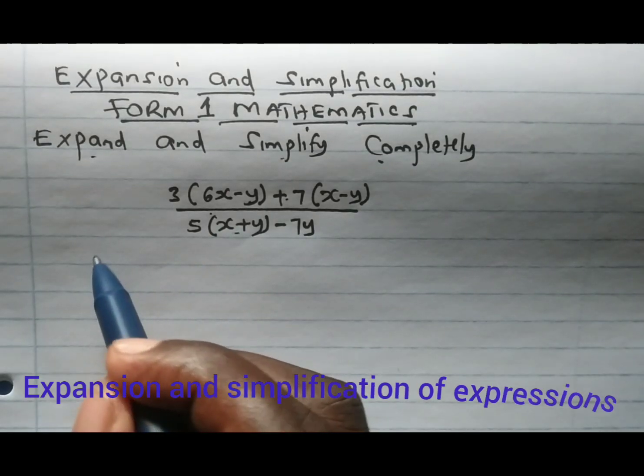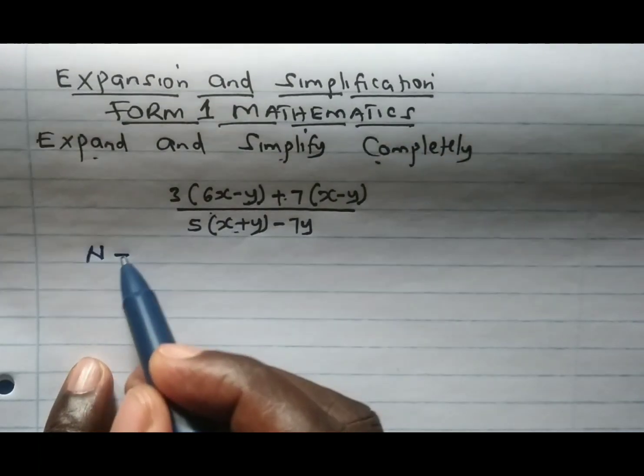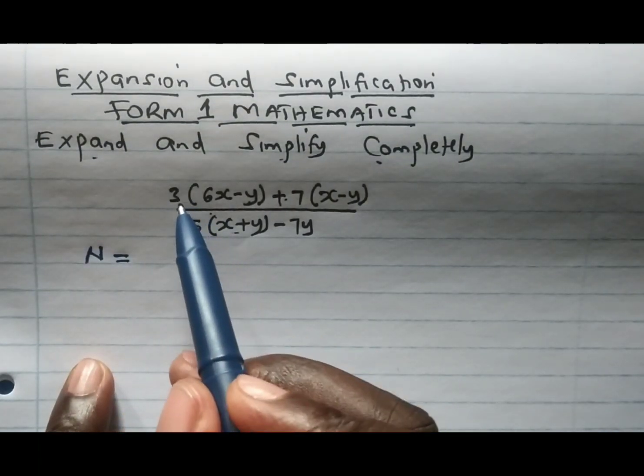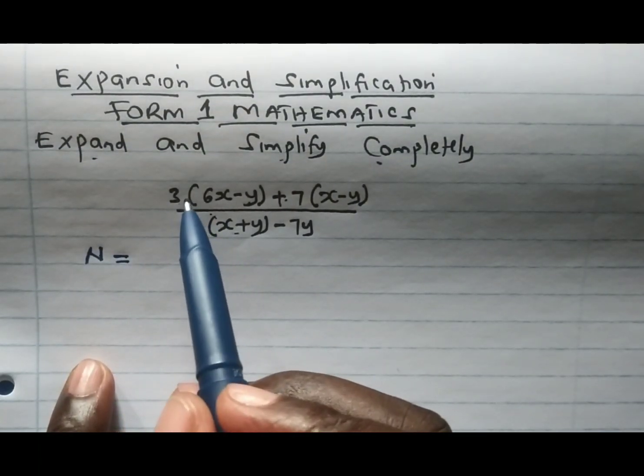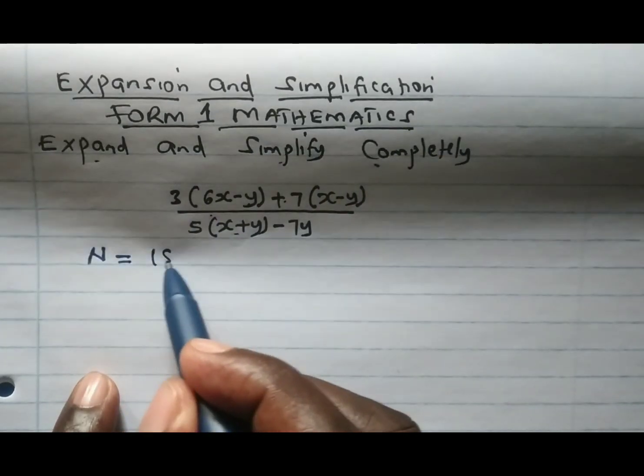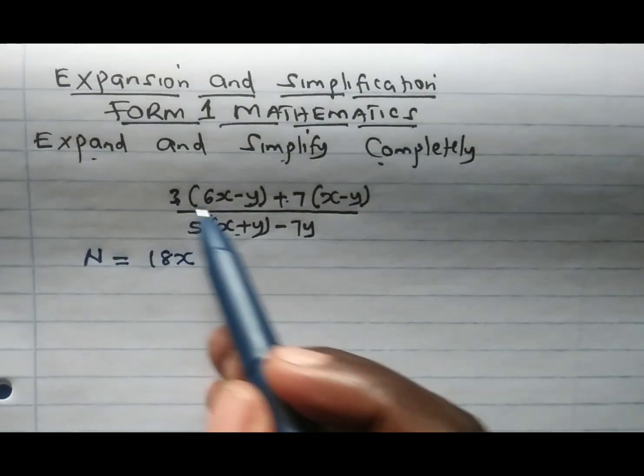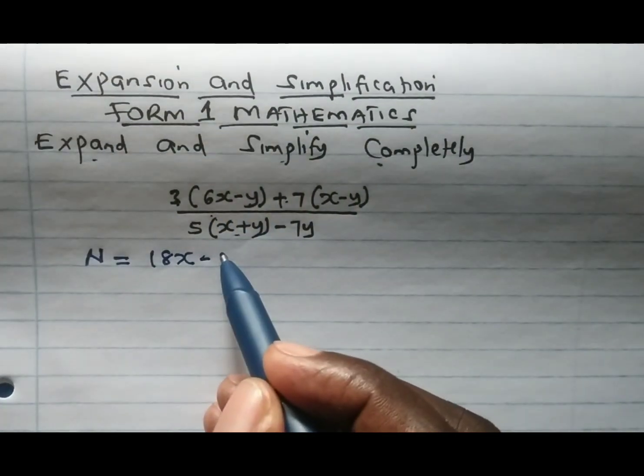We are going to begin by looking at the numerator first. In the numerator when we expand we get the following expression. That is 3 times 6x gives 18x, and 3 times minus y gives minus 3y.